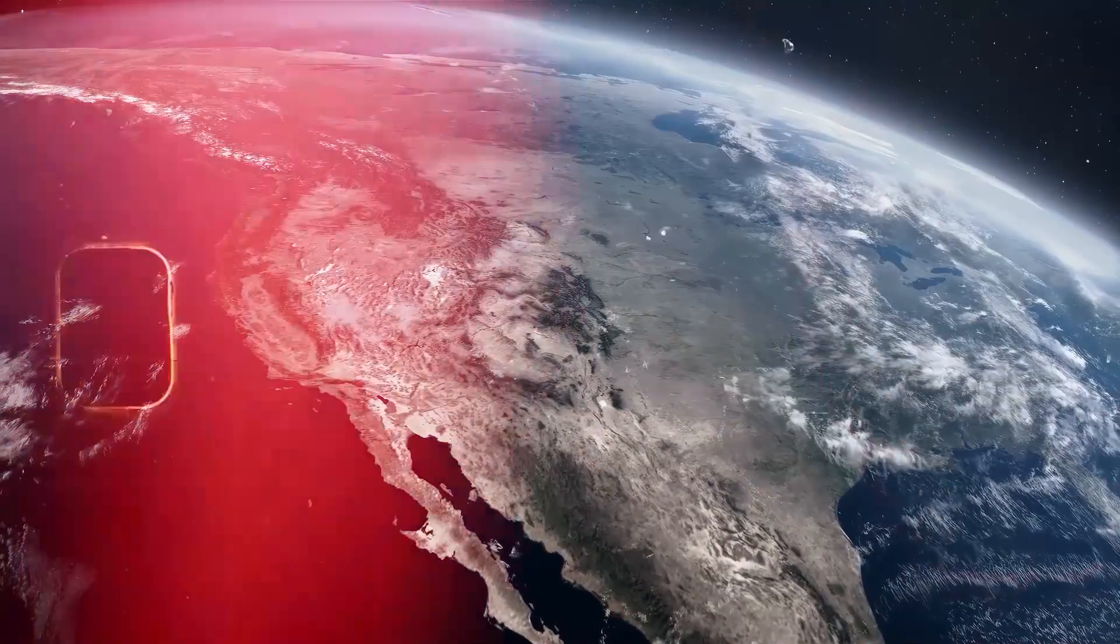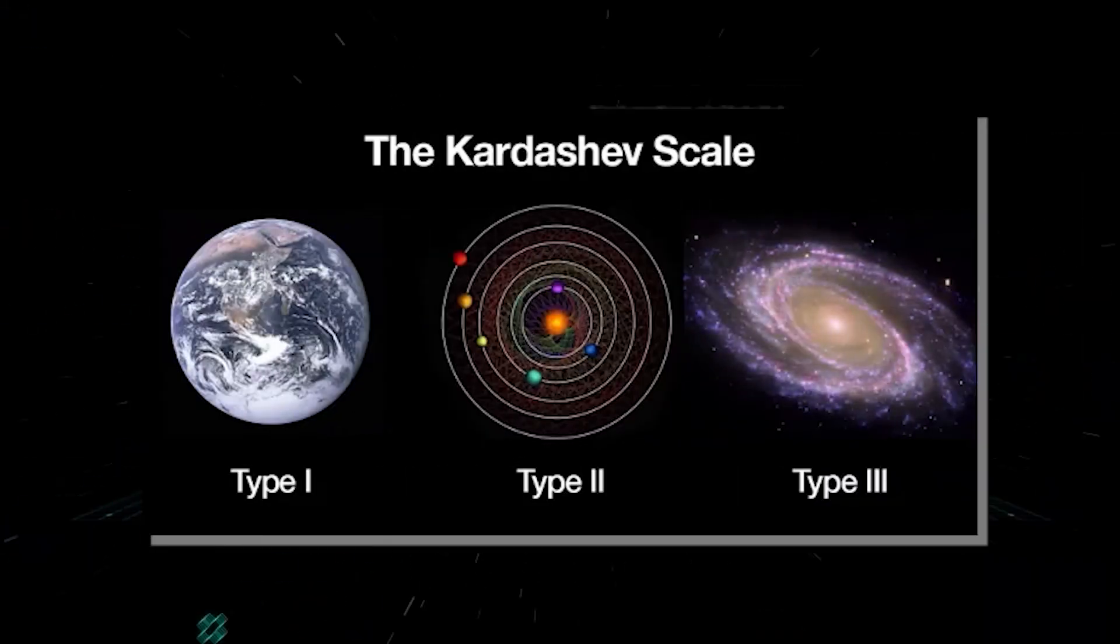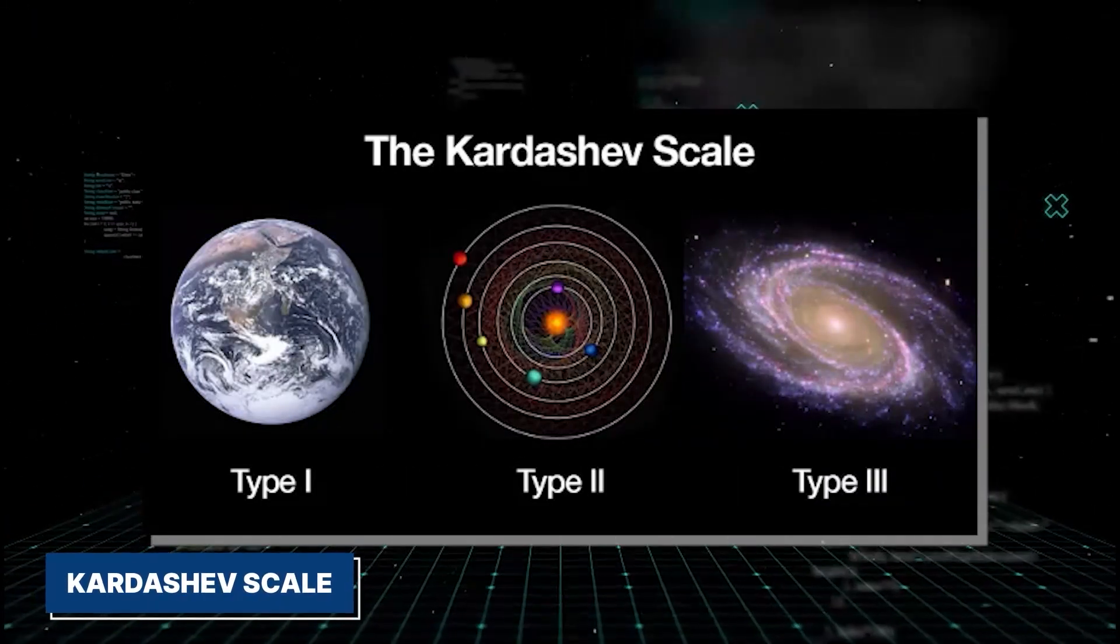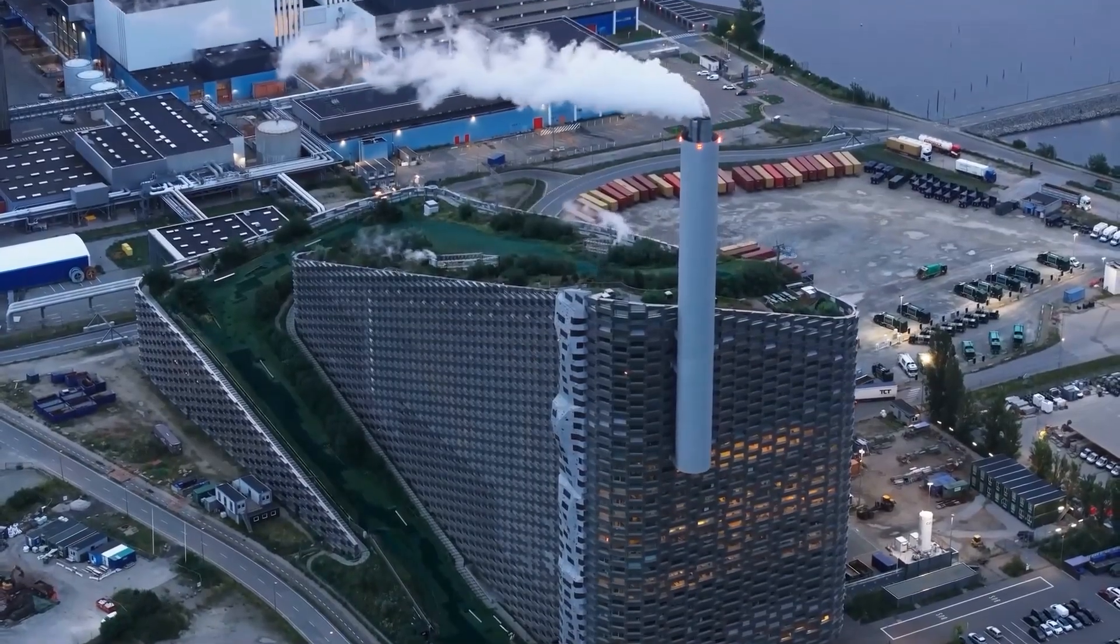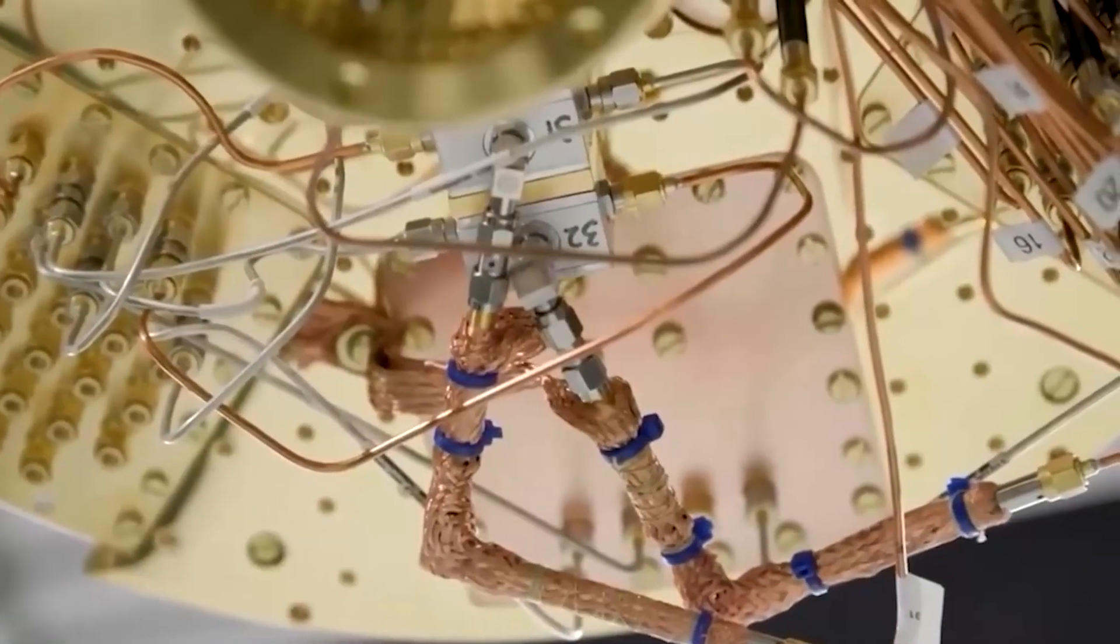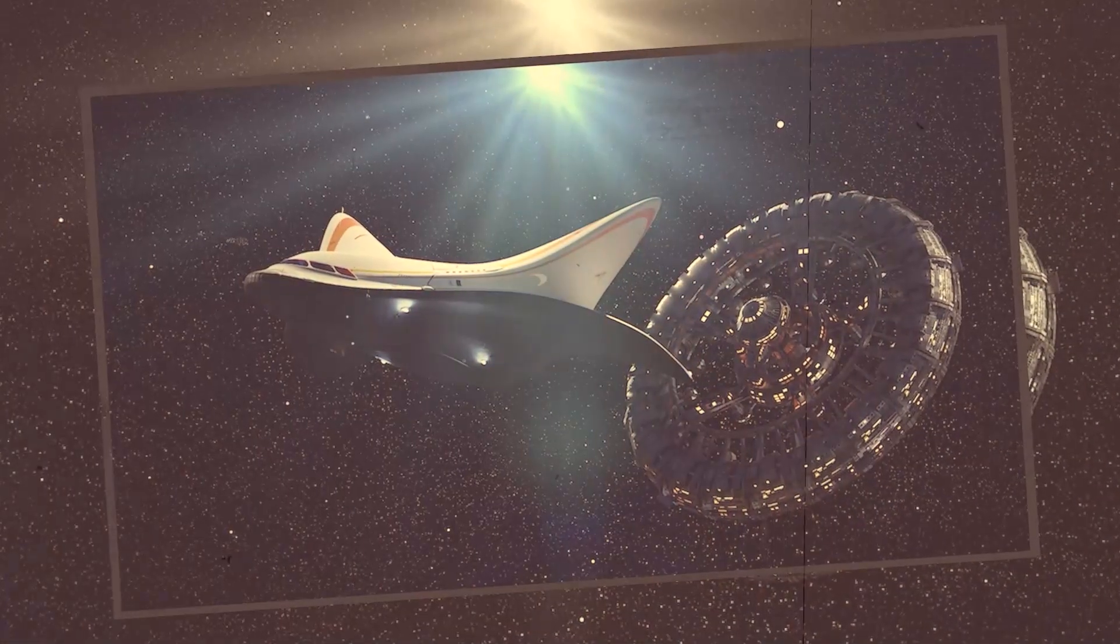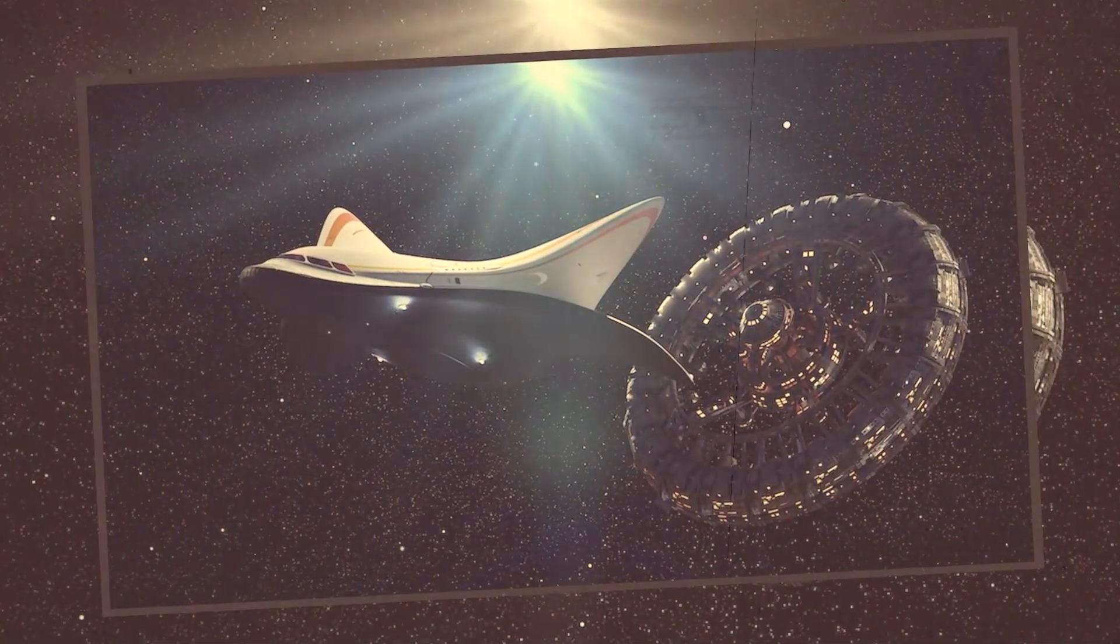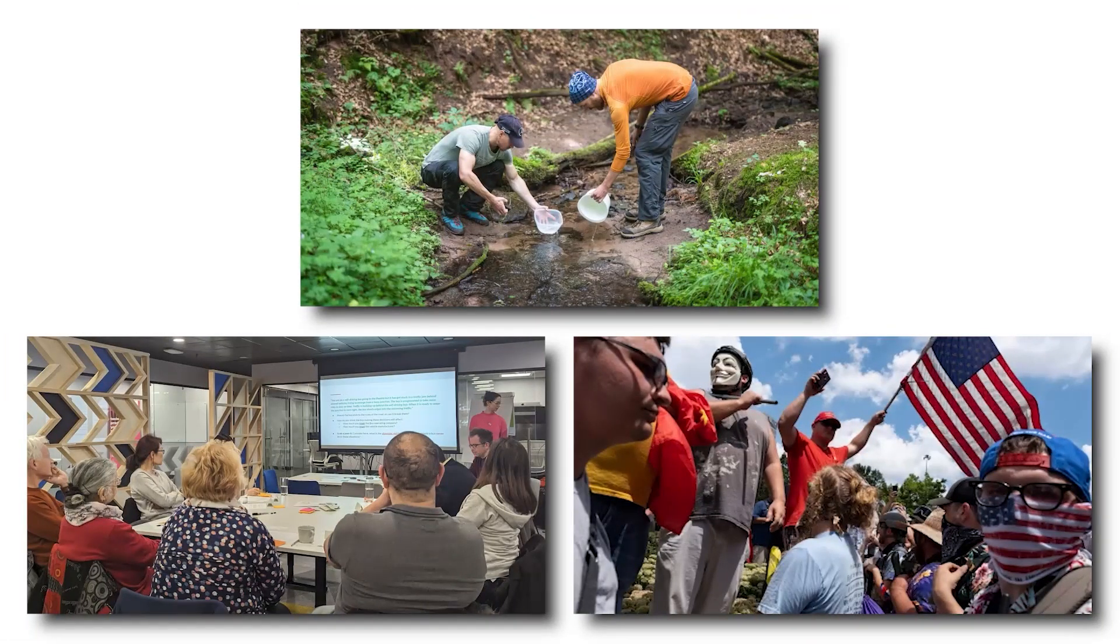And more interestingly, humanity sits just below a Type 1 civilization on the Kardashev scale. We harness a fraction of the energy available on our planet. But quantum computing could be the key that unlocks our leap forward. A true Type 1 civilization controls all energy on Earth. Every lightning bolt, ocean wave, and beam of sunlight directed toward growth, innovation, and survival.